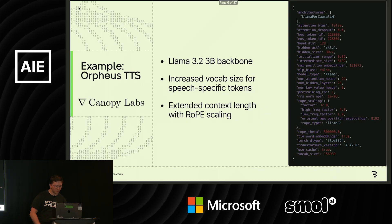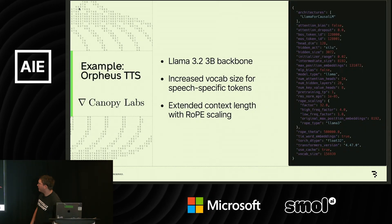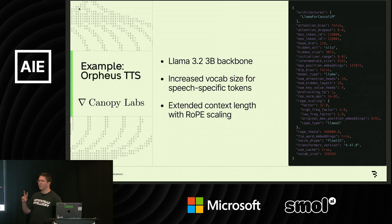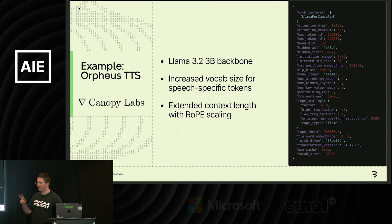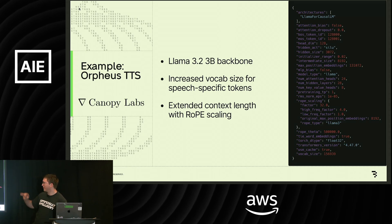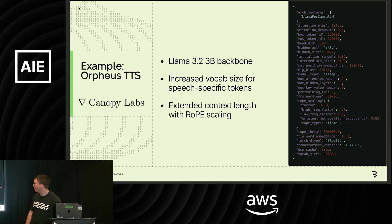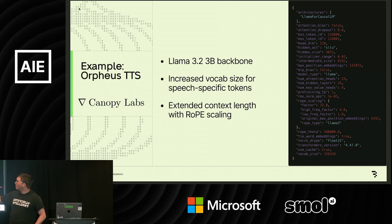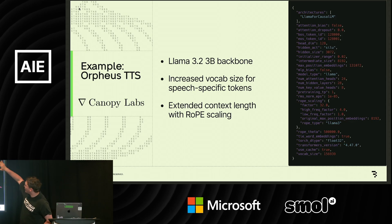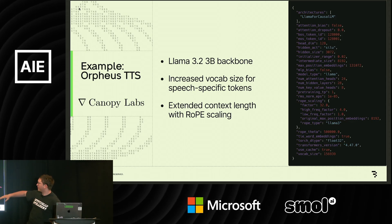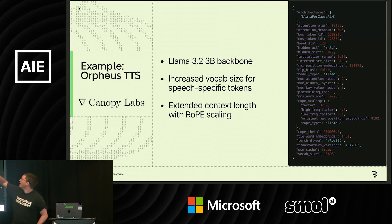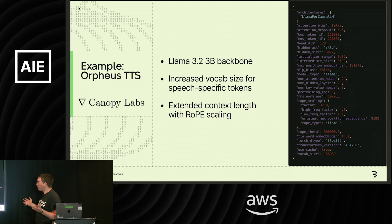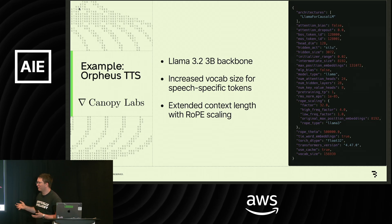The TTS model we're using as an example today is Orpheus TTS. We're using it because it's open source, it's really good, and the team at Canopy Labs is awesome. It has a LLaMA 3.2 3B backbone — if you look at the config from Hugging Face, it's literally a LlamaForCausalLM architecture. Because of that, we can apply all our normal LLM tooling to this model and make it faster.